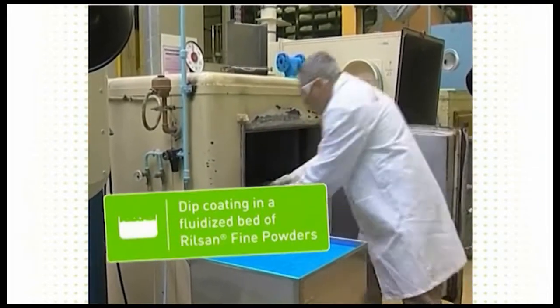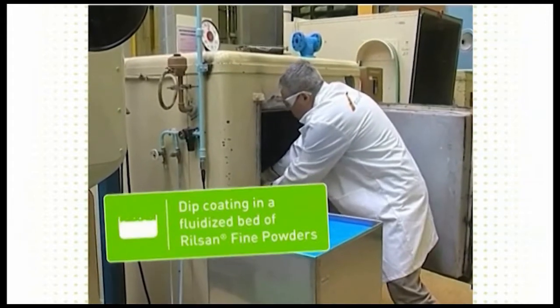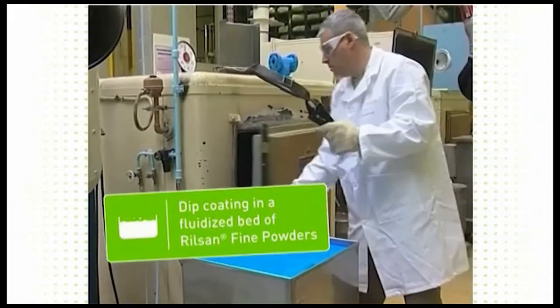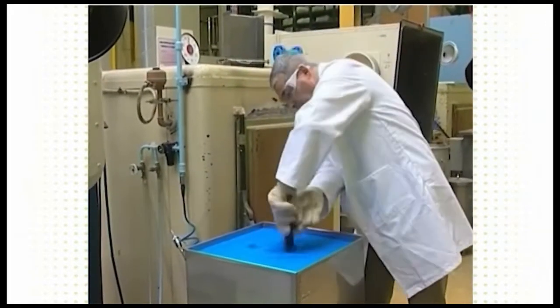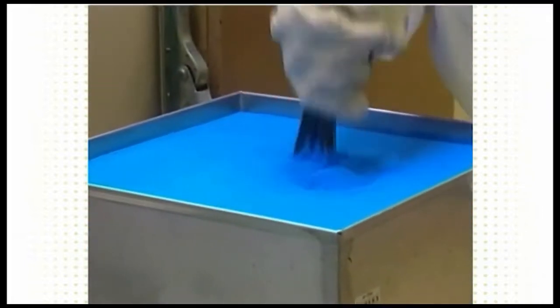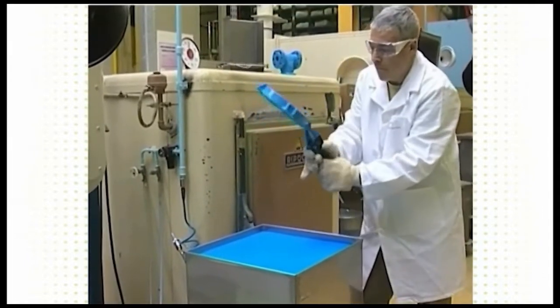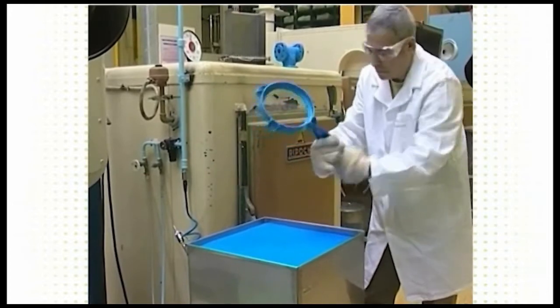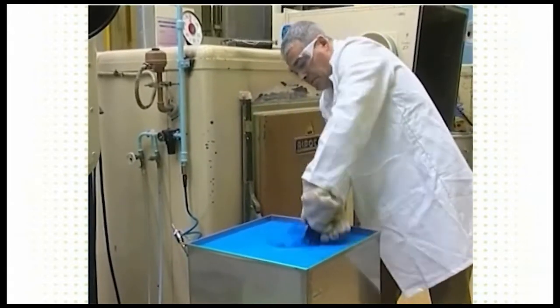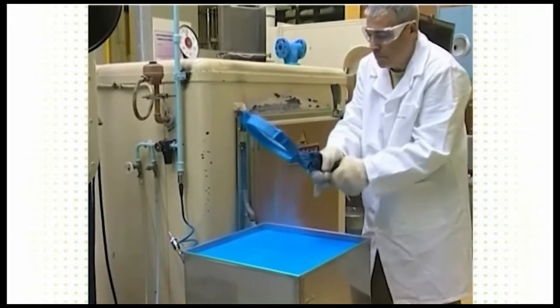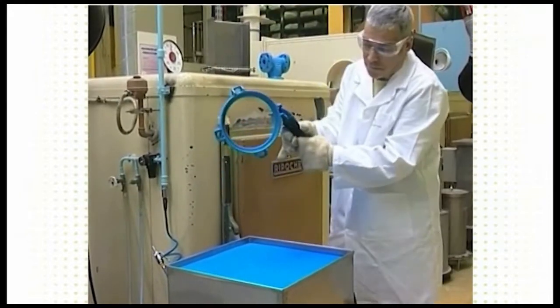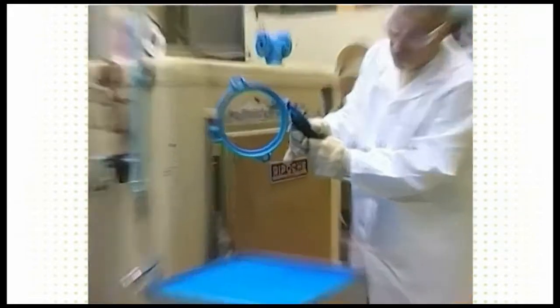Rilsan Coatings can also be obtained by dip coating the metal part in a fluidized bed. It consists in immersing a heated part in a powder bed maintained in suspension through rising air flow. As soon as the Rilsan powder comes into contact with the preheated article, it melts and forms a film on the surface.